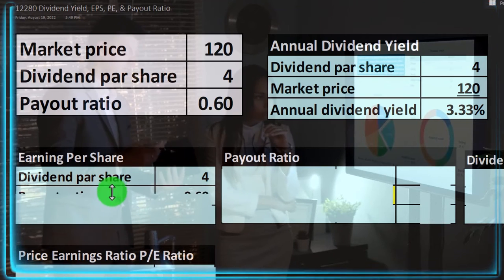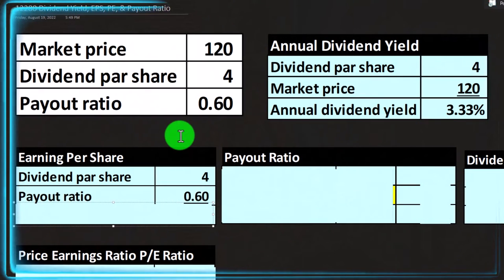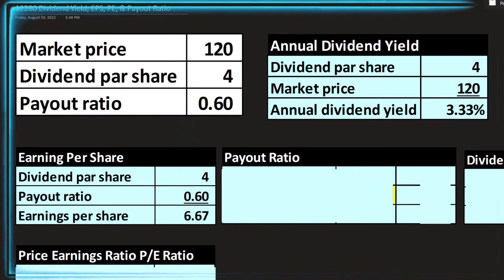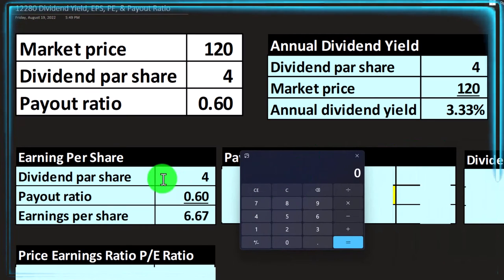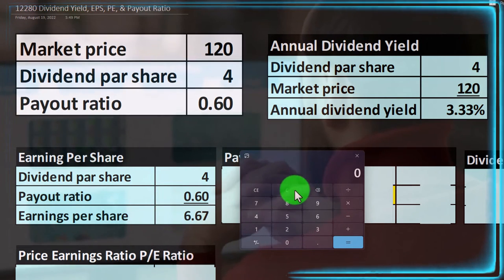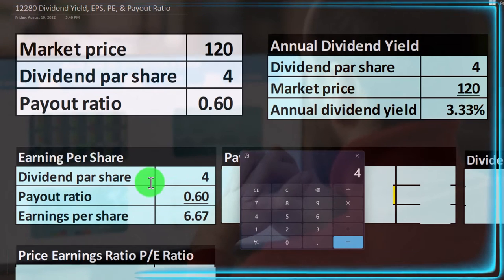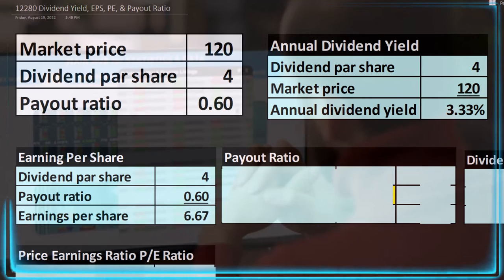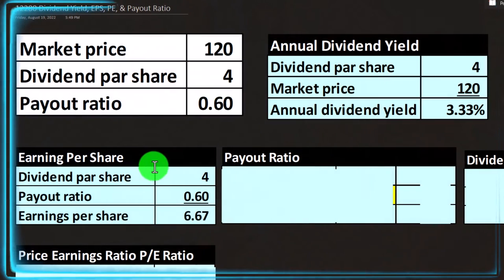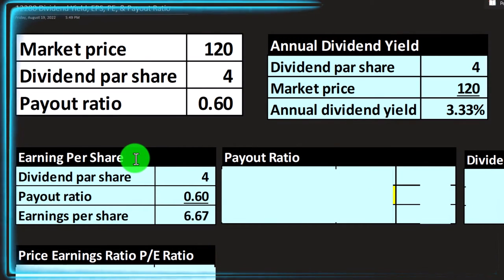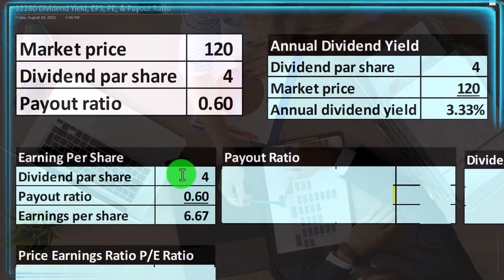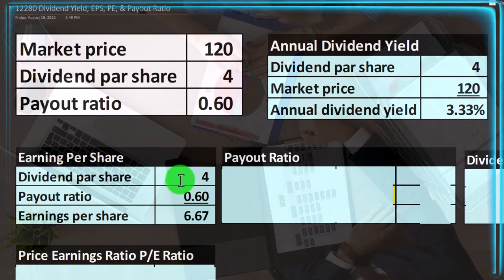Here we're going to take the dividends per share and use the payout ratio — the amount paid out of earnings per share in dividends — to get the earnings per share. If I know the dividends and I know the payout ratio, I can back into the earnings per share. So that would be 4 divided by 0.6, which gives us 6.67. You might think you need a balance sheet number to figure out earnings per share, but we also want to know the relationship between these calculations.